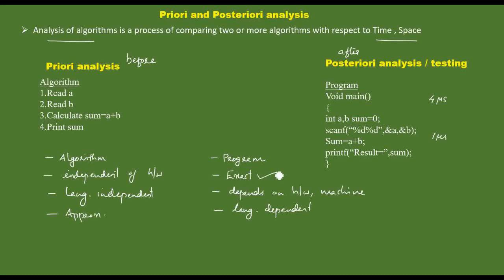In posteriori analysis we use exact values; in priori analysis we use approximate values. In priori analysis, we look at the algorithm: how many instructions are in each instance, how many times one instruction is read, the number of iterations, and in recursive algorithms, how many times the algorithm repeats. We use this to calculate the time function and space function.